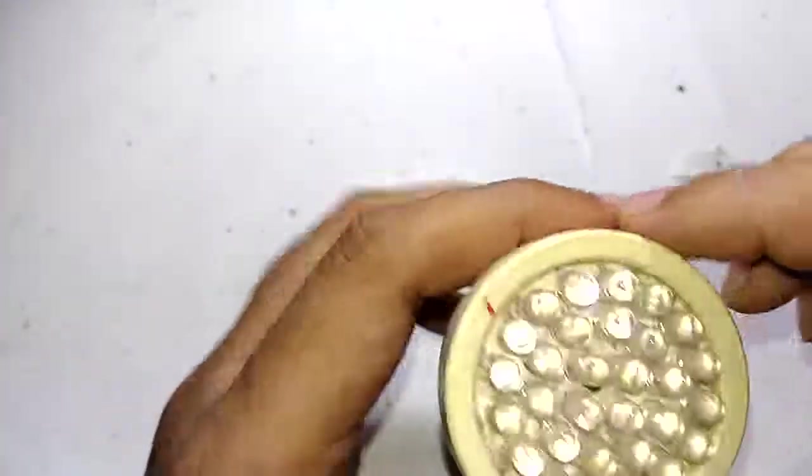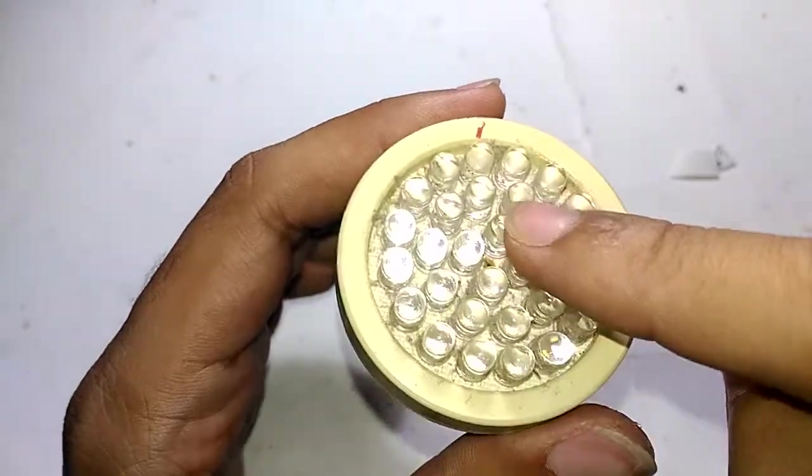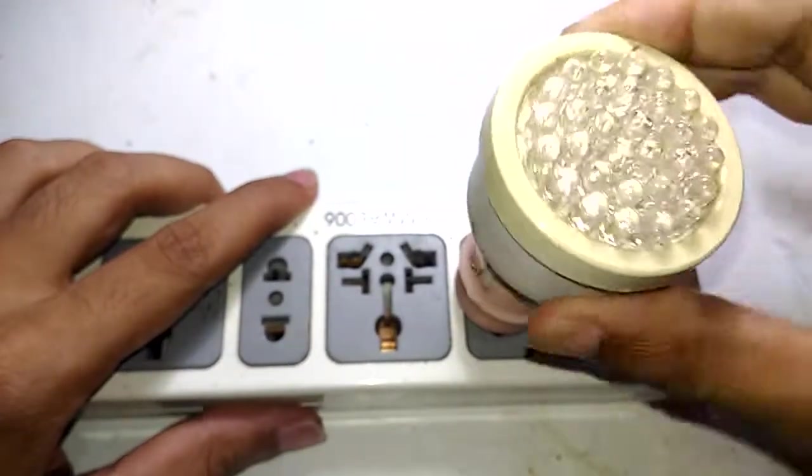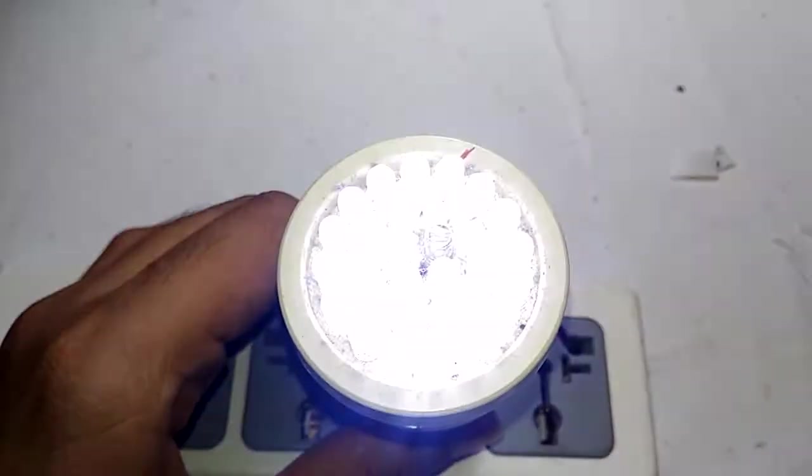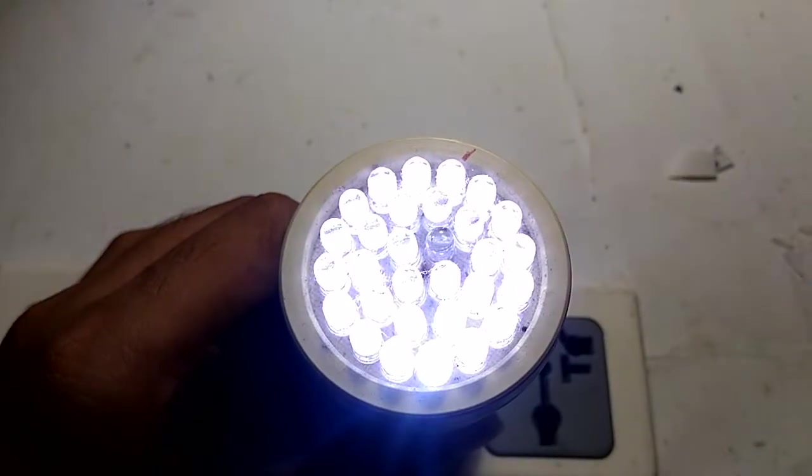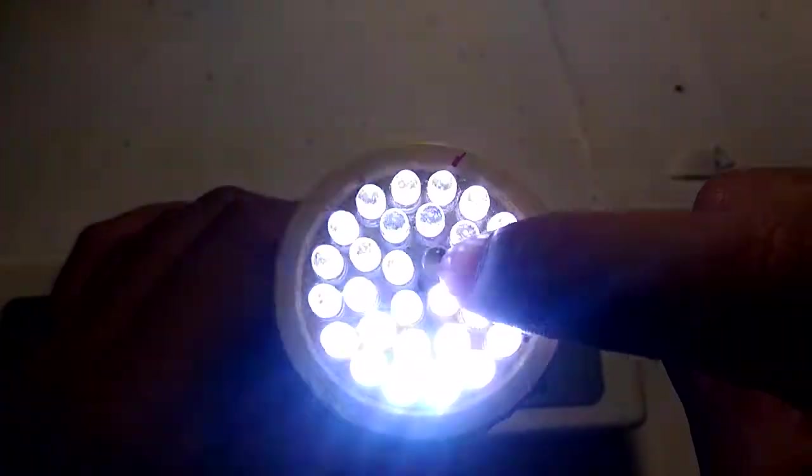Let's take this thing apart. I counted 30 LEDs in total. If I adjust the exposure down, you can now clearly see that among the 30 LEDs, one LED right there is not lighting up.